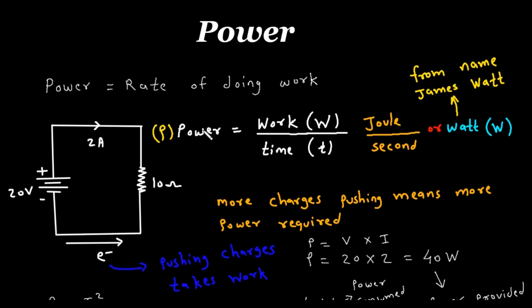Power is represented by capital P. It is the ratio of work upon time. The unit of work is Joule and the unit of time is second. Work is represented by capital W and time is represented by small t. The unit of power is Joule per second, or Watt, which is represented by capital W.